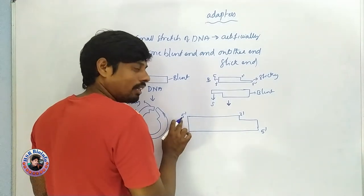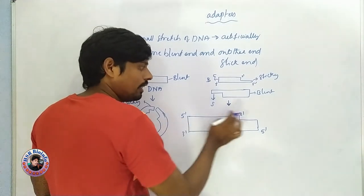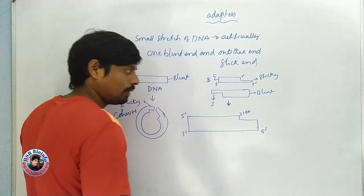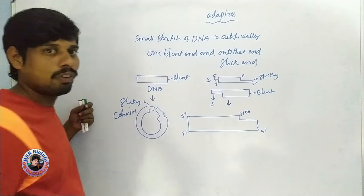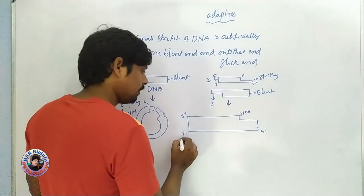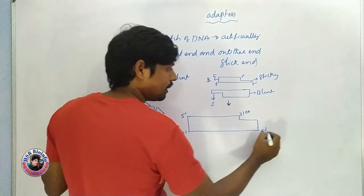This direction is 5' prime and this way is 3' prime. At the 3' end we have the OH group.